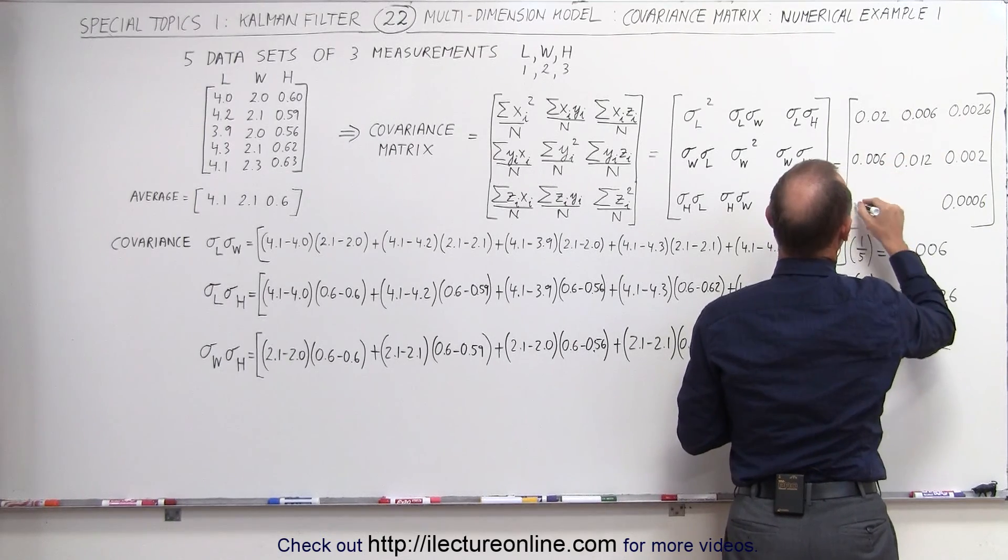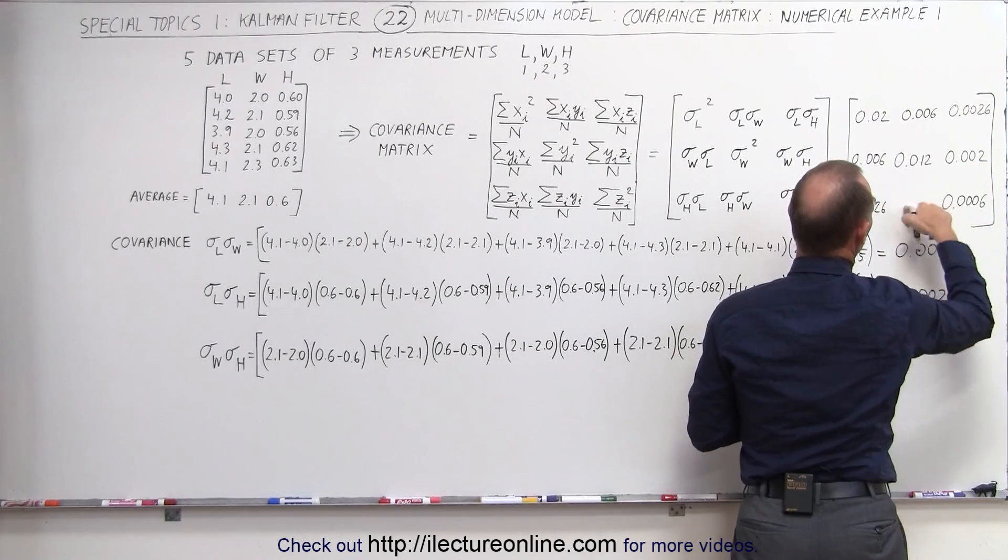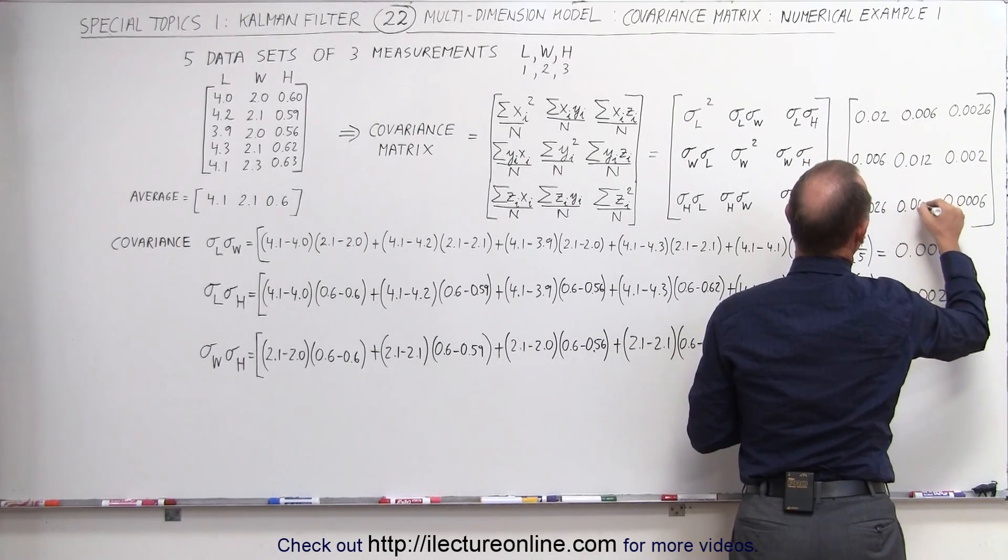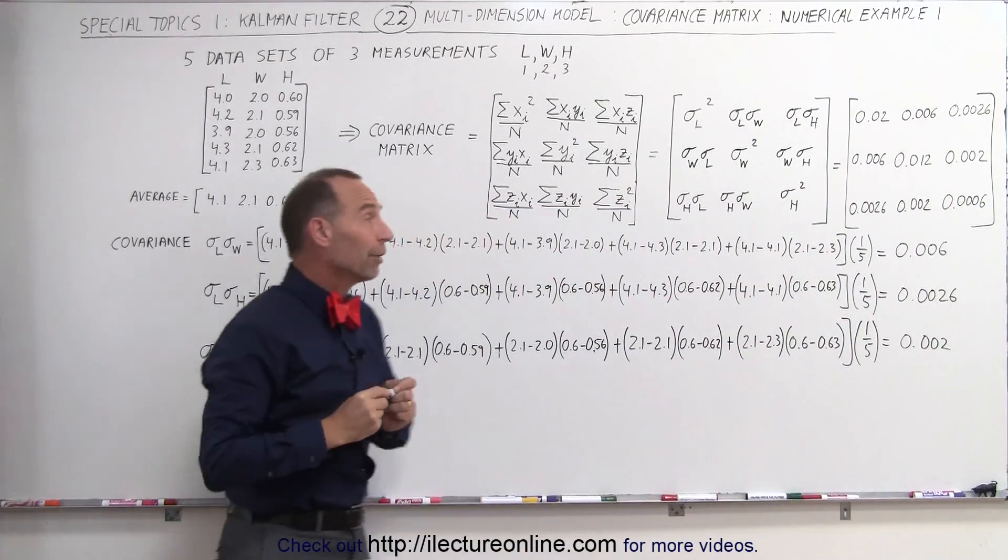This element would be across here, 0.0026, and this element goes over here, 0.002. And now we have all nine elements in the covariance matrix.